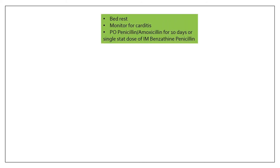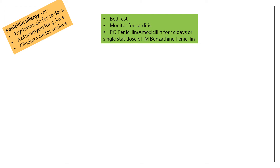If the patient presents with acute rheumatic fever, give bed rest, monitor for carditis, and give oral penicillin or amoxicillin for 10 days, or a single stat dose of IM benzathine penicillin. If the patient is allergic to penicillin, give erythromycin for 10 days, azithromycin for 5 days, or clindamycin for 10 days in that order of preference. These constitute the drugs for primary prevention.